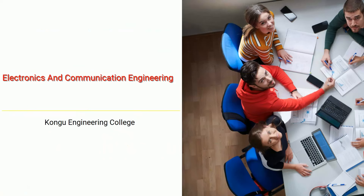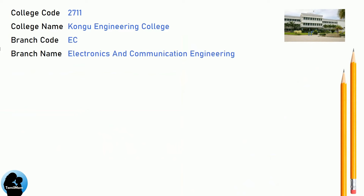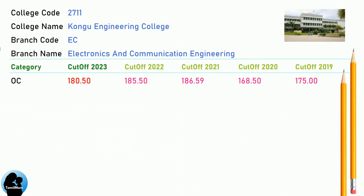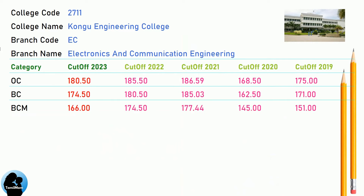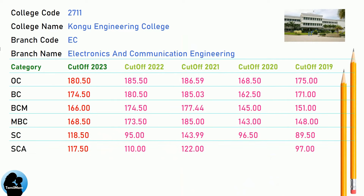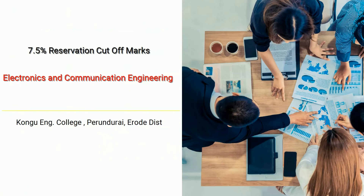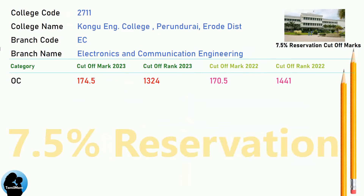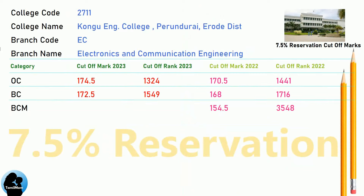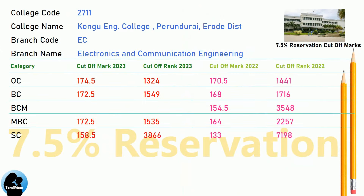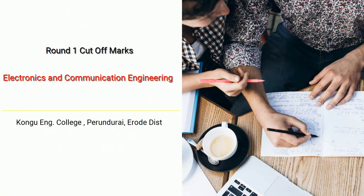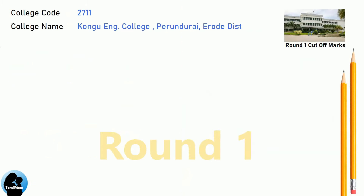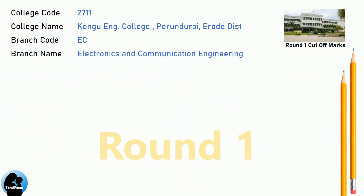BNA Cut-Off for Kongu Engineering College in Electronics and Communication Engineering. BNA 7.5 Reservation Cut-Off for Kongu Engineering College in Electronics and Communication Engineering. BNA Round 1 Cut-Off for Kongu Engineering College in Electronics and Communication Engineering.